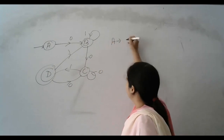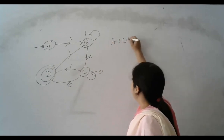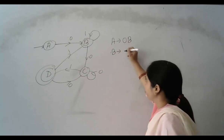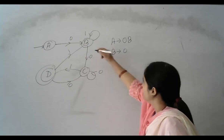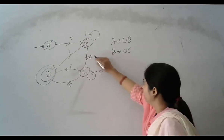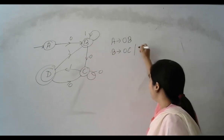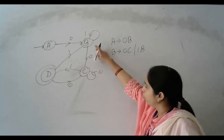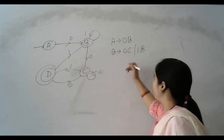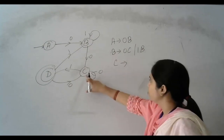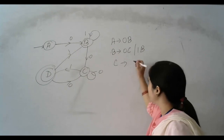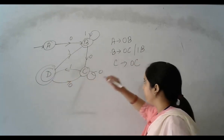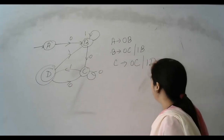A tends to 0B. Then B tends to 0C | 1B | 0. You can read 0 and go to C, or read 1 and stay at B. And you don't go to the final state directly. C tends to 0C — self loop. And reading 1, you can go to D, so C tends to 1D.